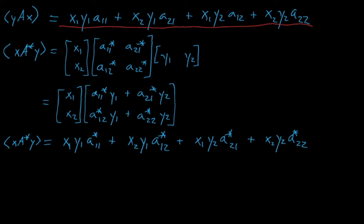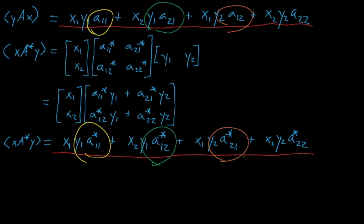Now this expression, again, must equal the inner product from before of yAx. Now because x₁, x₂, y₁, and y₂ can assume any kind of value whatsoever, the only way possible to guarantee that these expressions will be equal all the time is if A*₁₁ is equal to A₁₁, if A*₁₂ is equal to A₂₁, if A*₂₁ is equal to A₁₂, and lastly if A*₂₂ is equal to A₂₂.